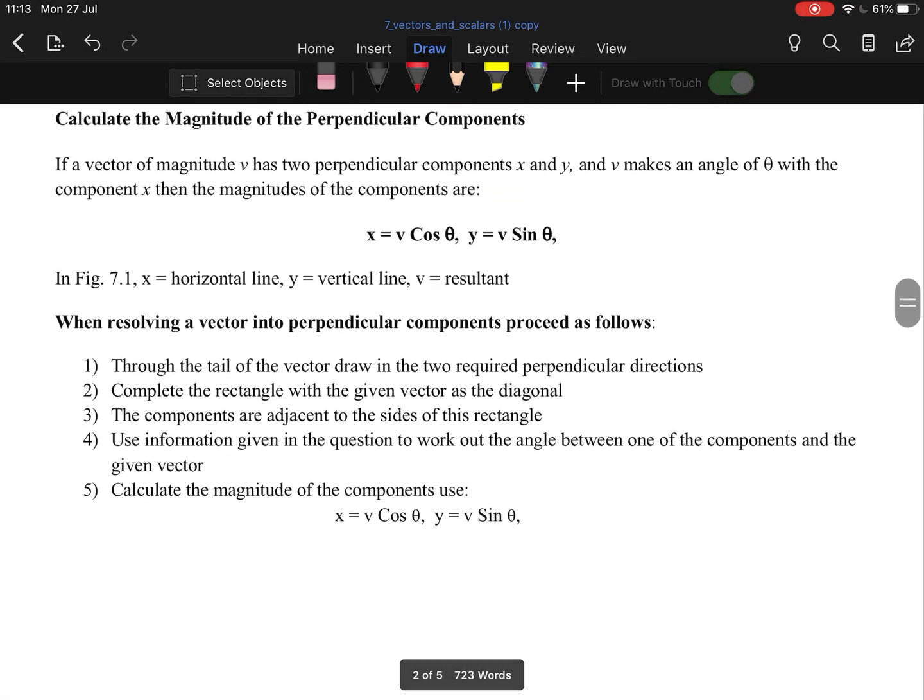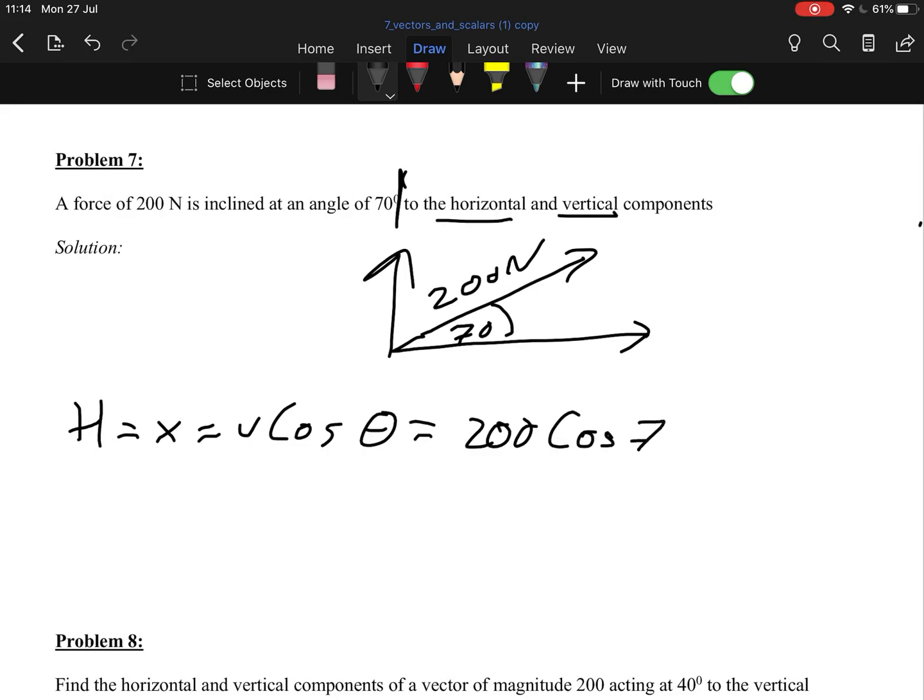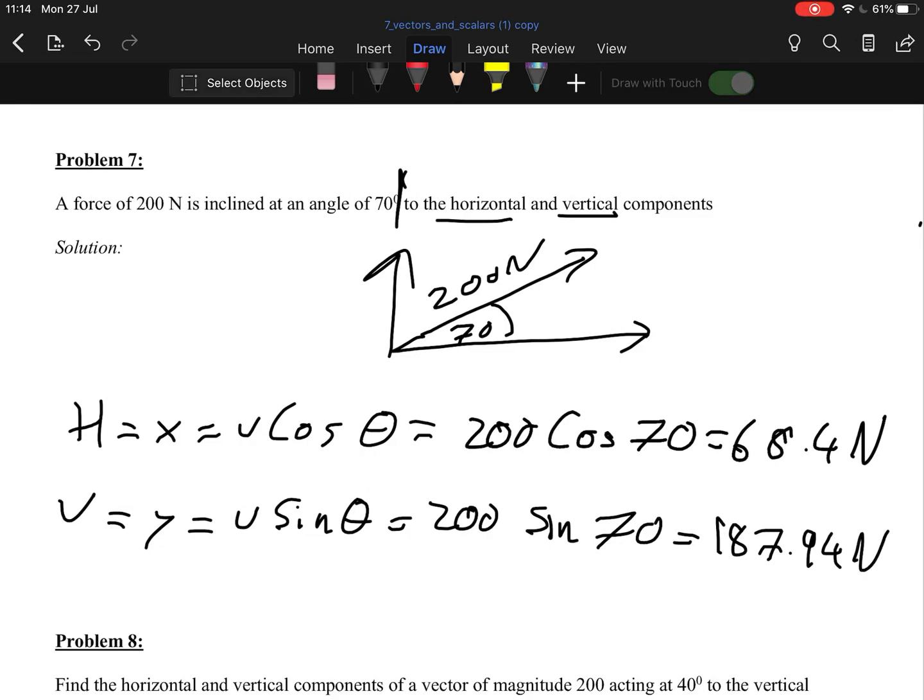Now I have a question below that I'll do. The first question here is a force of 200 newtons is inclined at 70 degrees from the horizontal. So now what we want to find is the horizontal and vertical. So that's simple enough. H is x. X equals v cos theta, which is 200 cos 70. So that should work out as 68.4 newtons. Don't forget your SI units. Our vertical component is y, which equals v sin theta, which is 200 sin 70, which should be 187.94 newtons. There you go. Very straightforward. Fairly easy.